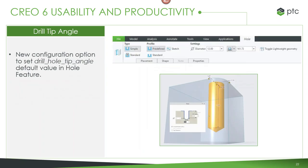Another small but highly requested feature is the configuration option to set the drill hole tip angle. Previously, we chose a default number that wasn't the same number everyone was using, and people got tired of editing that same option every single time they made a feature. Now you have a configuration option to modify what the default will be for that particular feature.